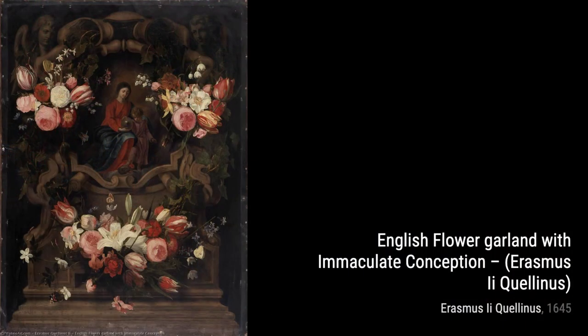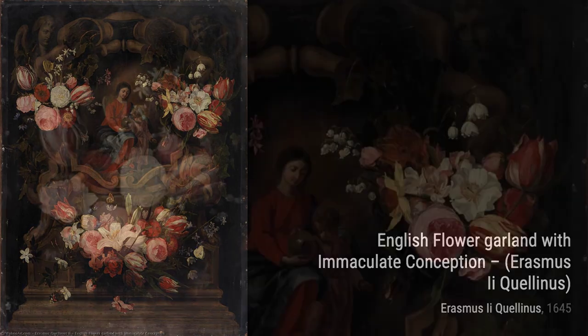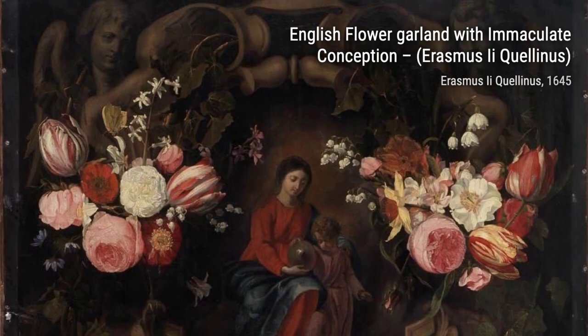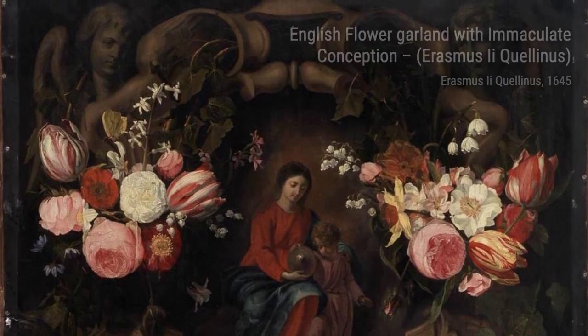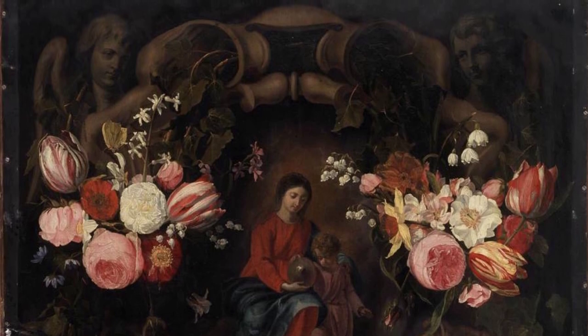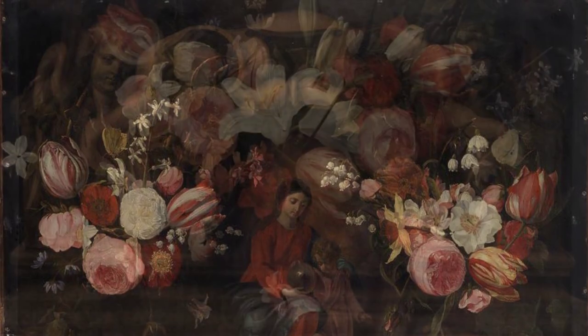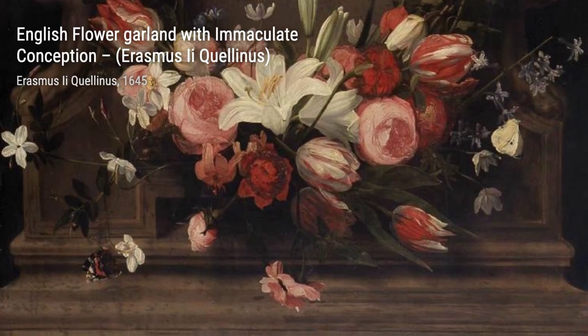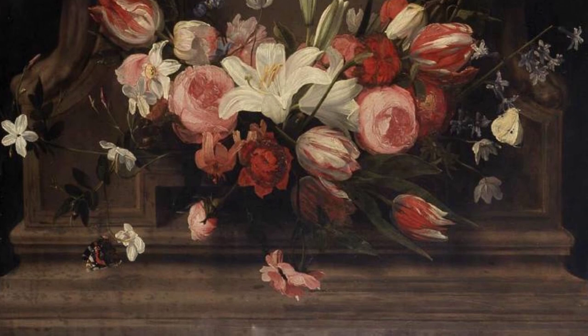The Rape of Europa depicts the mythological scene of Zeus disguised as a bull abducting the princess Europa, highlighting the power dynamics and drama of the story. The Miracles of Saint Hugh of Lincoln showcases various miracles attributed to Saint Hugh of Lincoln, emphasizing his holiness and divine intervention.